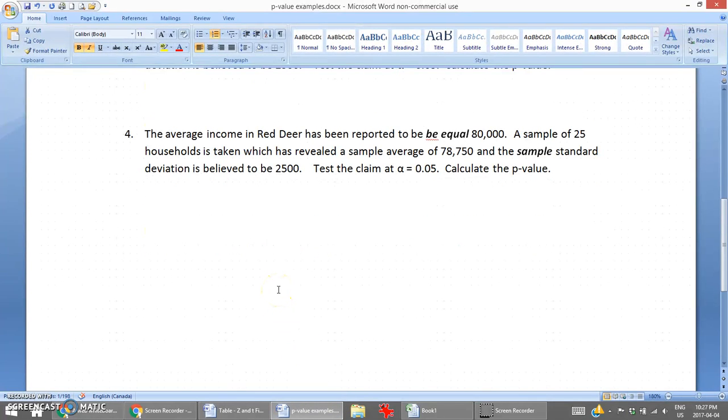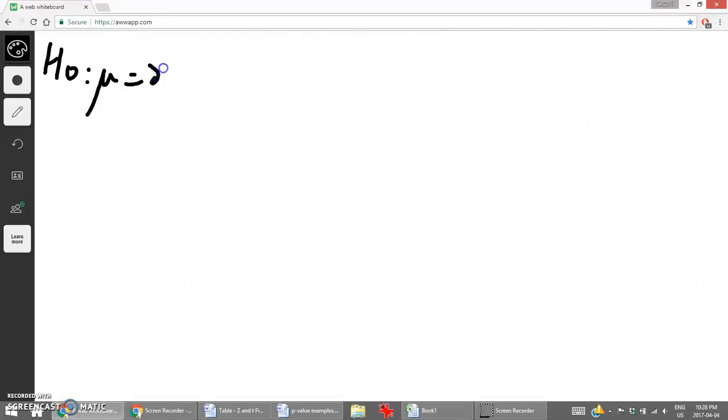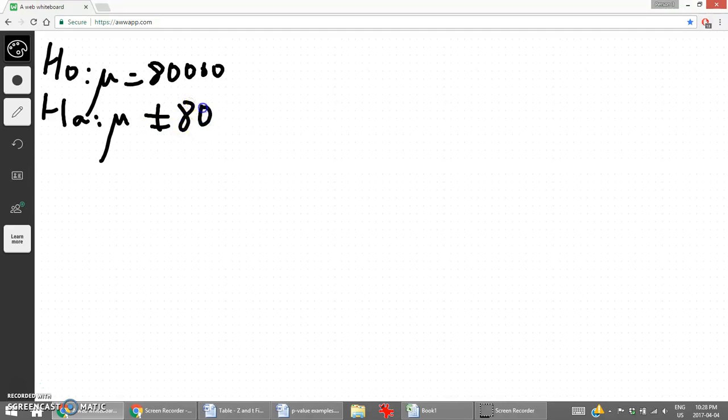The second example, number four. The average income in Red Deer. Everything is the same, except for the income is reported to be equal to 80,000. And the sample average is given. The sample standard deviation is also given. So once again this is going to be using t values. The difference here is the average is assumed to be equal to 80,000. We're going to test the opposite. So this is an example of a two-tail test. Let's write out the hypotheses. The null hypothesis: the average equals 80,000. Alternate hypothesis is that it does not equal 80,000.